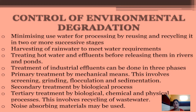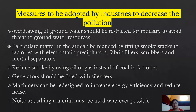Hot water with toxic pollutants should be treated before releasing into rivers and ponds. Treatment of industrial effluents can be done in three phases: primary treatment by mechanical means such as screening, grinding, flocculation, and sedimentation; secondary treatment by biological processes; and tertiary treatment by biological, chemical, and physical processes involving recycling of wastewater. Noise absorbing materials may also be used to reduce noise.